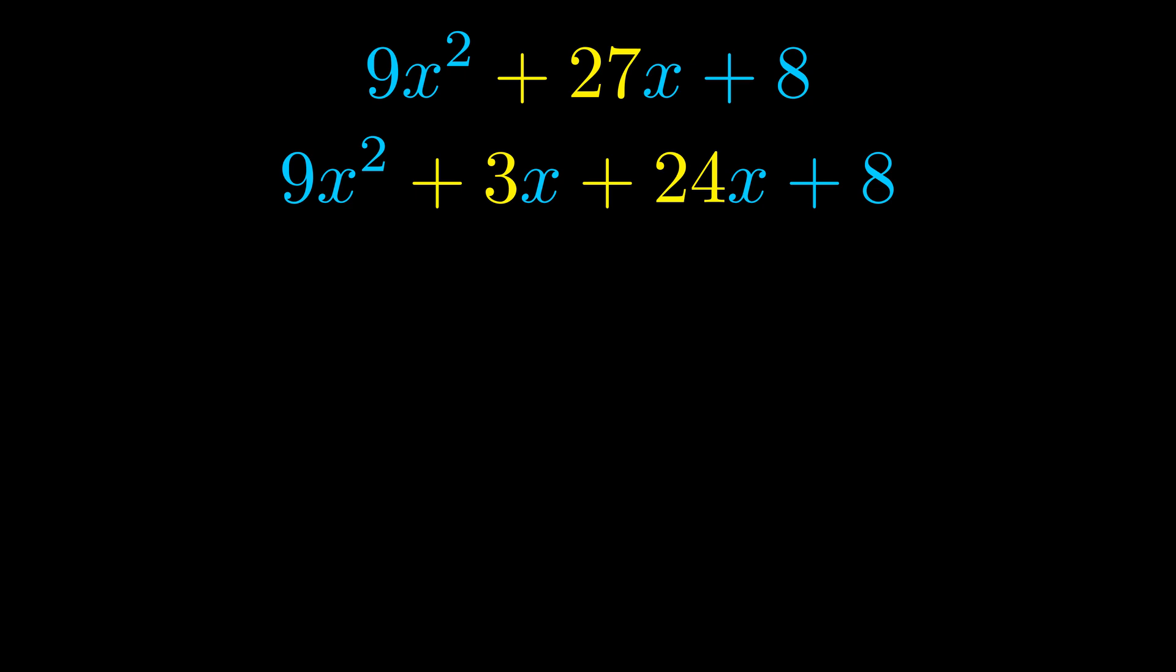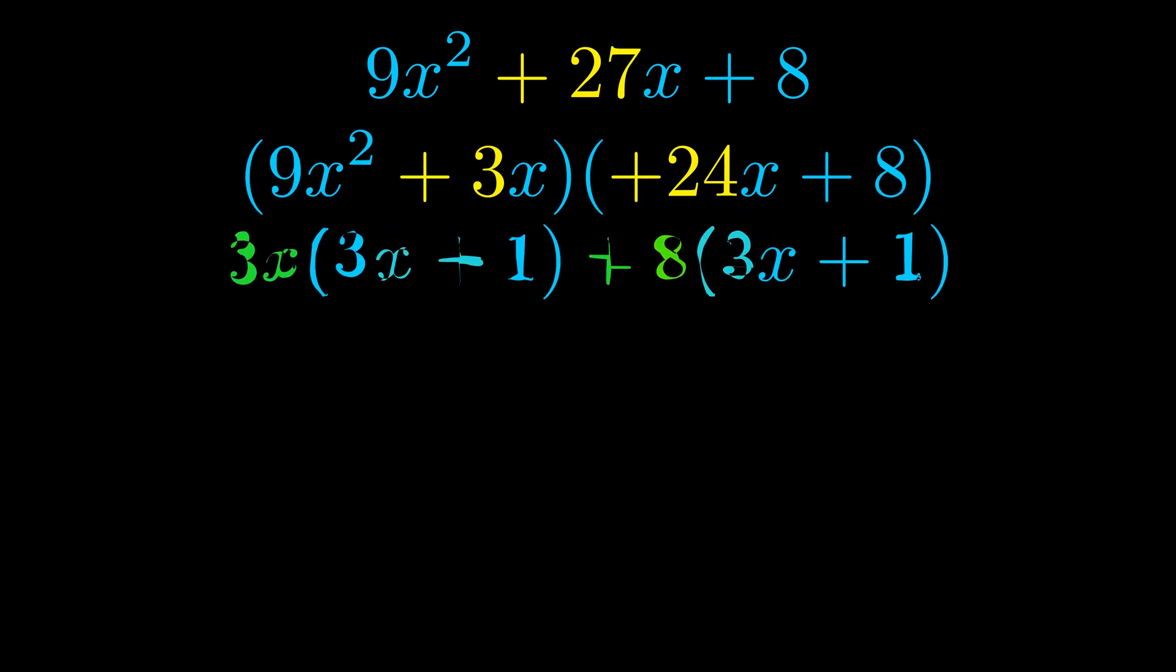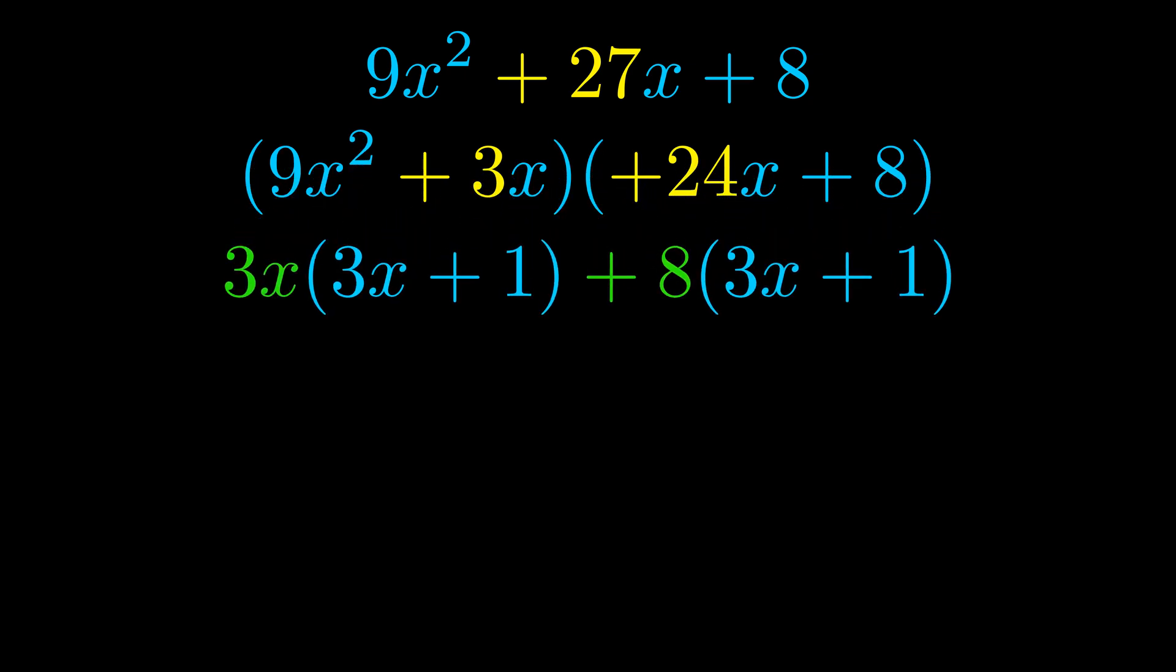Once we've done this we go ahead and we put parentheses around the first term and the last term. And we do that so that we can take the greatest common factor out of both terms. We can see the greatest common factor is now outside in green.